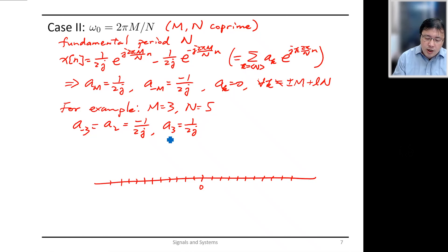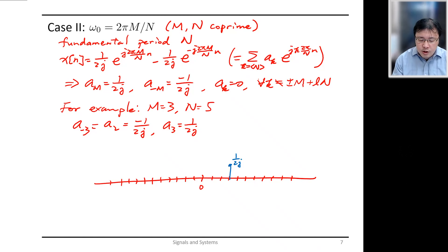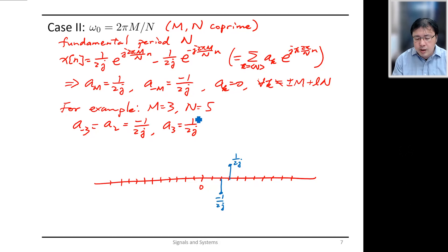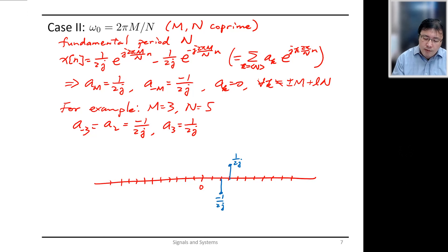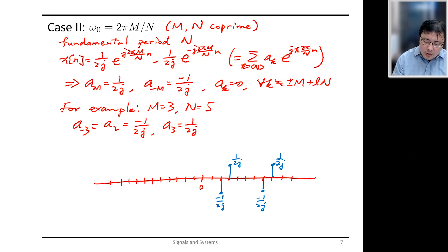Plotting this out, we have 1/(2j) at index 3 and −1/(2j) at index 2. Since the period is N = 5, this repeats every integer multiple of 5. So shifting by 1, 2, 3, 4, 5, we again have −1/(2j) and 1/(2j) at the corresponding positions, with all others being zero.